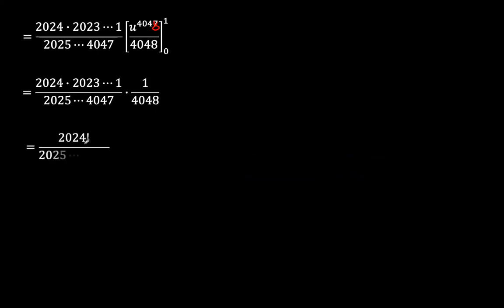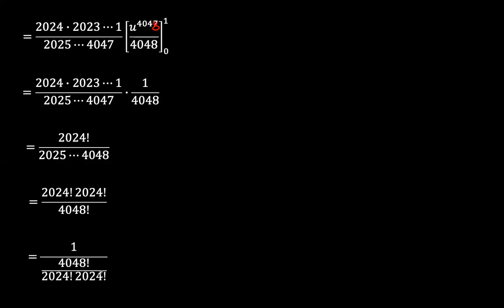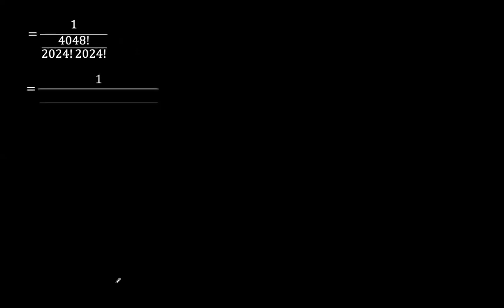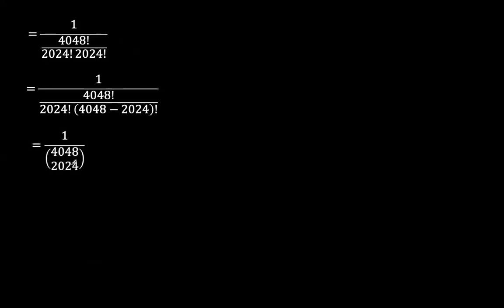So this is 2024 factorial in the numerator, because we multiplied 2024 down to 1. In the denominator we have 2025 multiplied all the way to 4048, so we are missing 2024 factorial to complete 4048 factorial. We can place 2024 factorial in the numerator and now have 4048 factorial in the denominator. This is 1 over 4048 factorial divided by 2024 factorial times 2024 factorial, which equals 1 over the binomial coefficient C(4048, 2024). This is the answer.